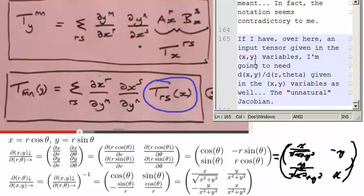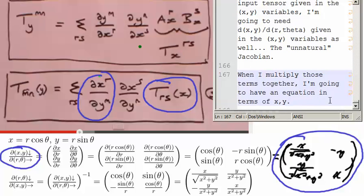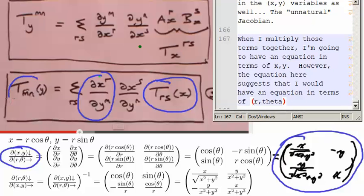If I have, over here, an input tensor given in x,y variables, I'm going to need the dx,dy terms, the dx,y, dr,theta terms, to also be given in terms of x,y variables as well. That's the unnatural Jacobian for that situation. When I multiply those terms together, I'm going to have an equation in terms of x,y. However, the equation here suggests that I would have an equation in terms of r,theta.